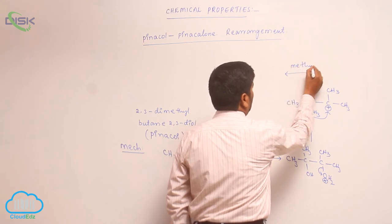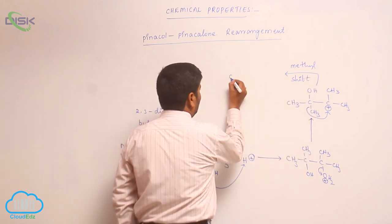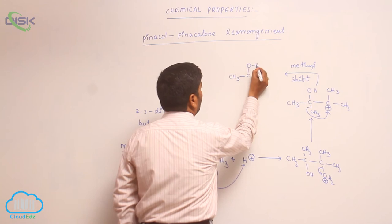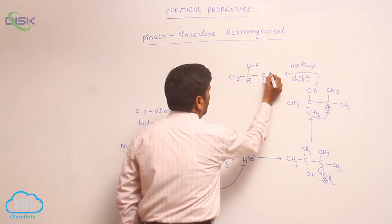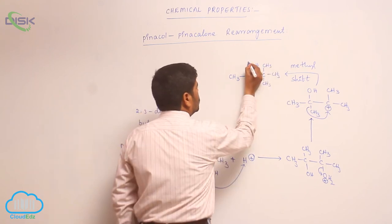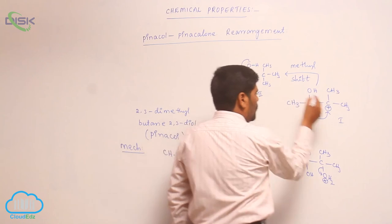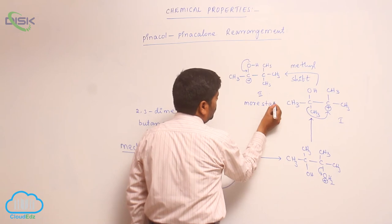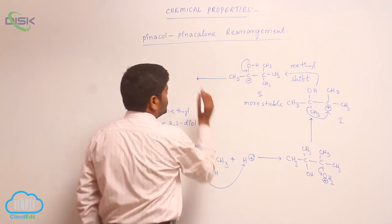Next, a methyl group shifts. Due to this methyl shift, stability increases compared to the first-formed carbocation. After the shift, there are CH₃ groups present, and the lone pair of electrons on oxygen conjugates with the positive charge on carbon.